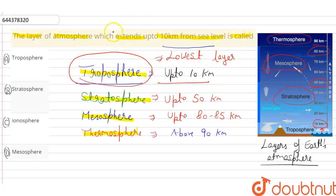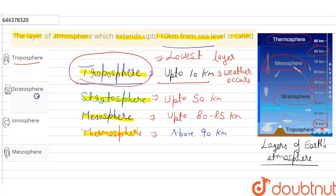Weather occurs in this layer. Therefore, option A — troposphere — is correct. Option B, C, and D are wrong. The layer of atmosphere which extends up to 10 km from sea level is called troposphere. Thank you.